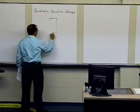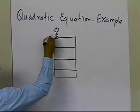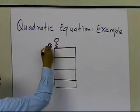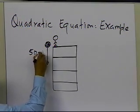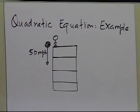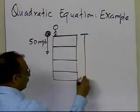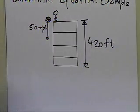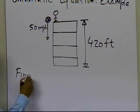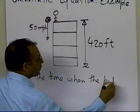Let's suppose somebody is at the top of a building, and he or she throws a ball from the top of the building downward at 50 miles per hour. So they're not just leaving the ball from rest, but throwing it down with some initial velocity from the top to the bottom. The building is given to be 420 feet tall, and what we want to do is find the time when the ball reaches the ground.